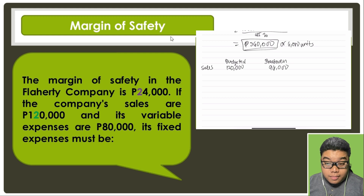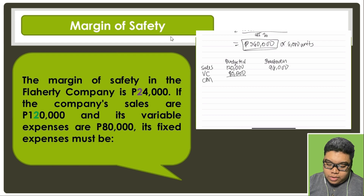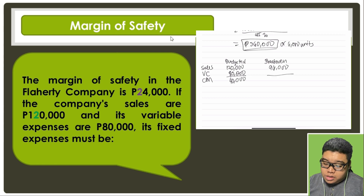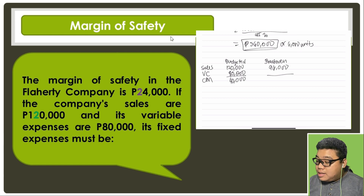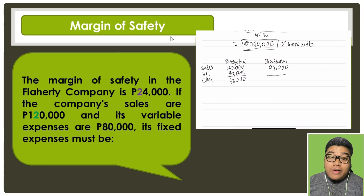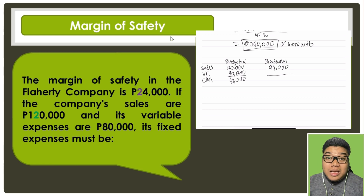The variable expense is 80,000, so contribution margin is 120,000 minus 80,000, which is 40,000. In ratio, the contribution margin ratio is 40,000 divided by 120,000, which is one-third. We learned earlier that contribution margin ratio is constant within the relevant range — we discussed this in variable costing. So this one-third is also applicable for the break-even sales.